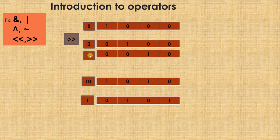Going back to example 8 — if I shift it twice it becomes 0 0 1 0, and if I shift it once again it becomes 0 0 0 1. This is how we implement the right shift operation.